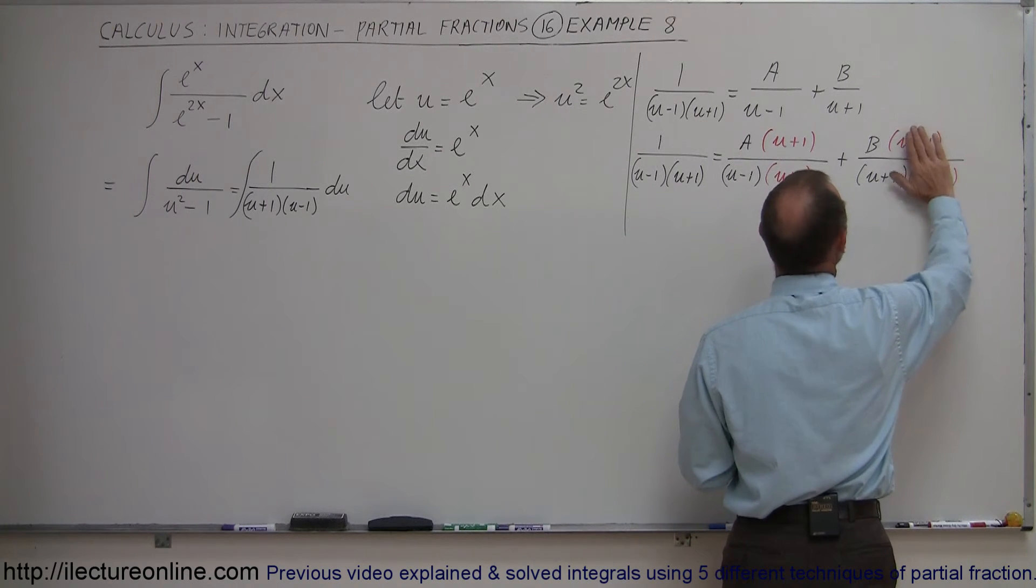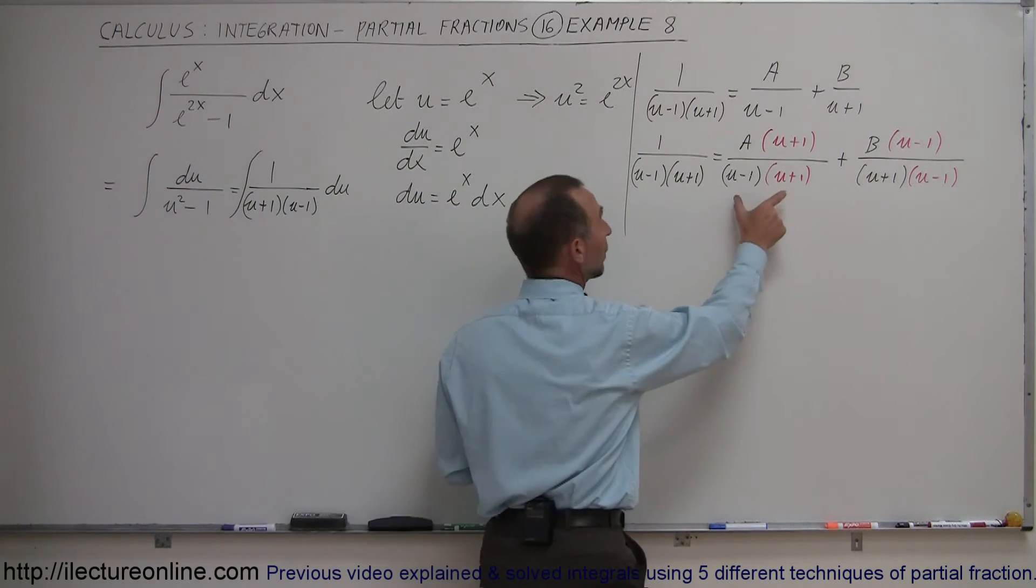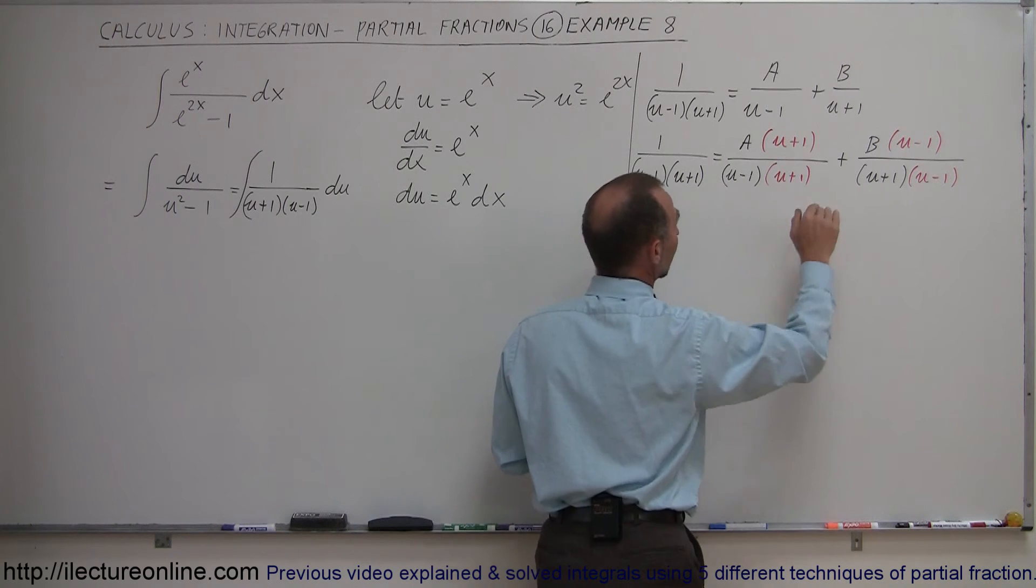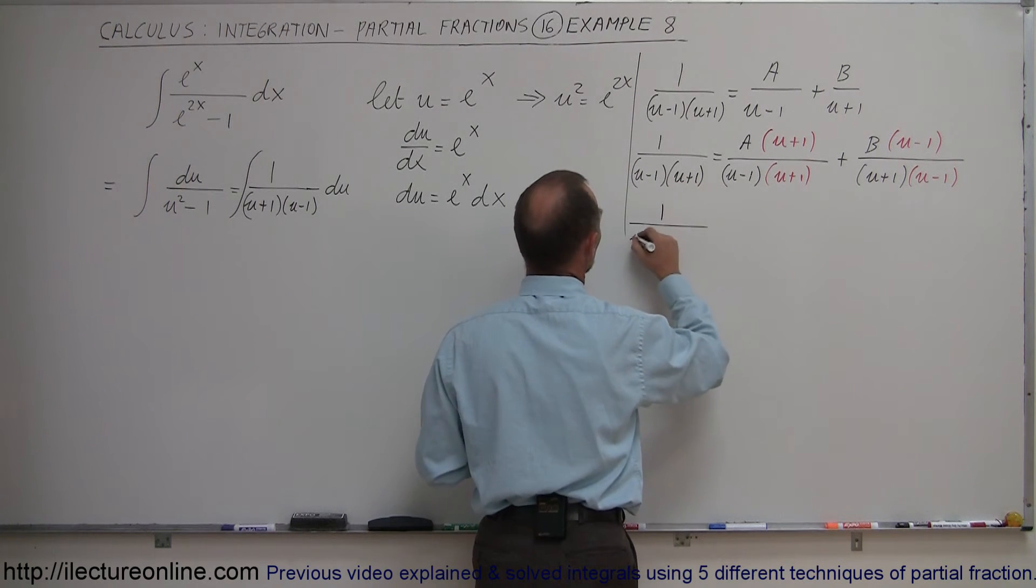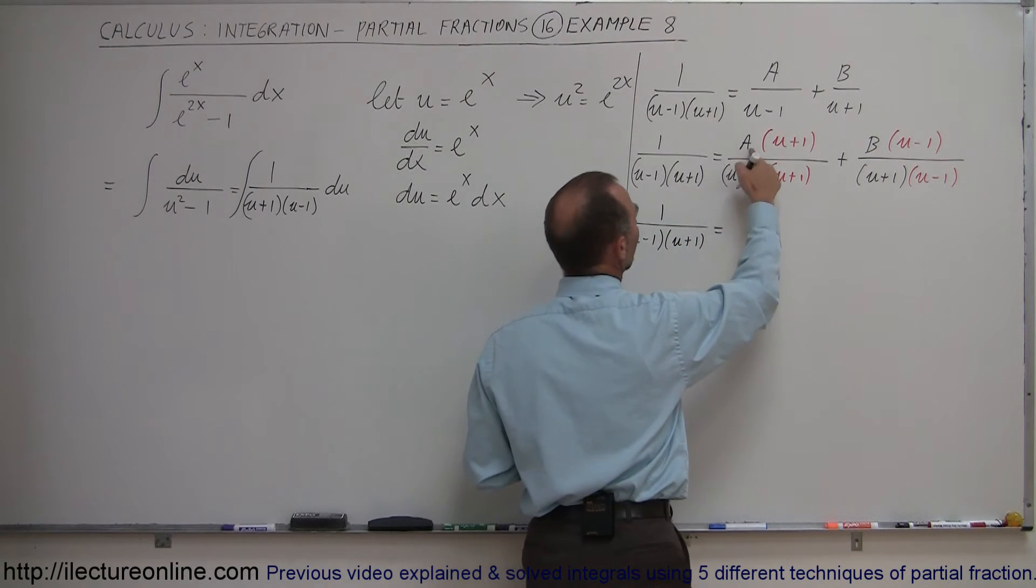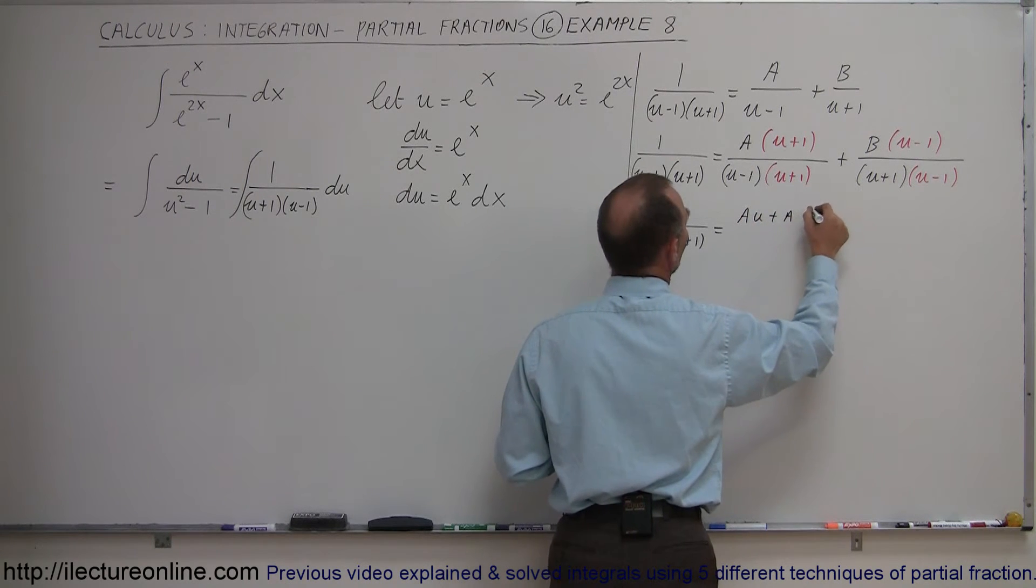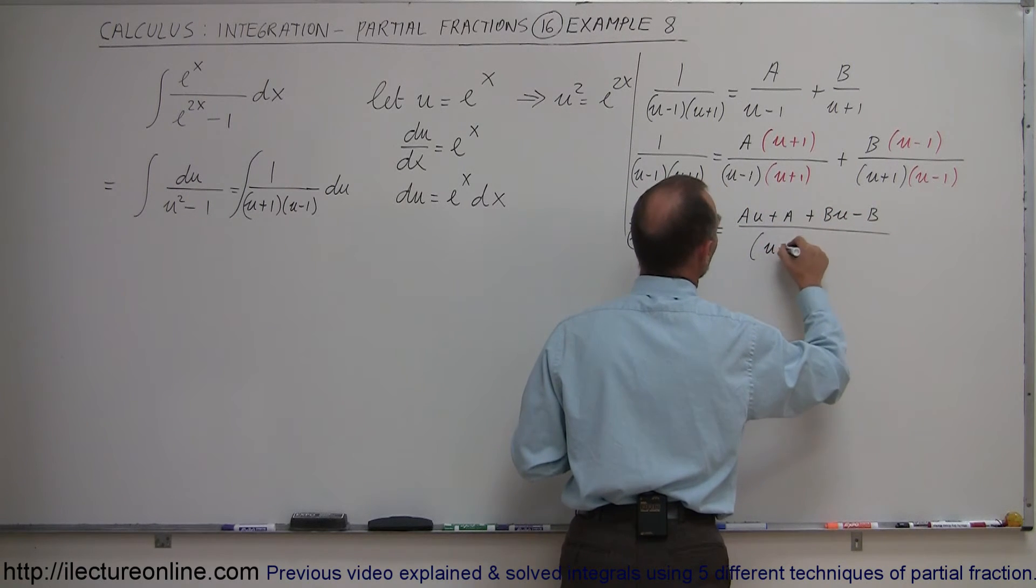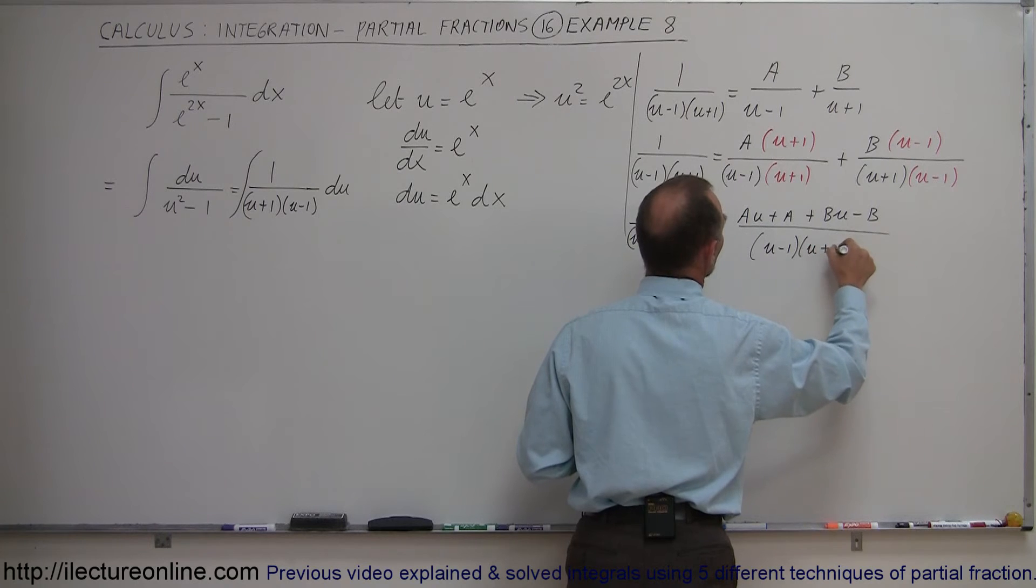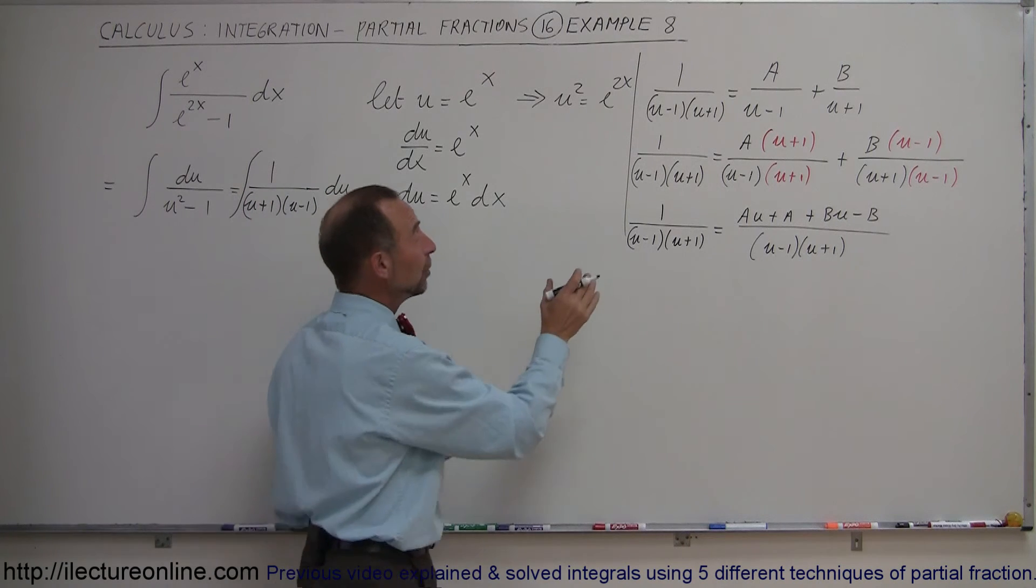Multiplying to get common denominators: A(u+1) + B(u-1) over (u-1)(u+1). This equals (Au + A + Bu - B) over (u-1)(u+1). The denominators are the same, so the numerators must be equal.